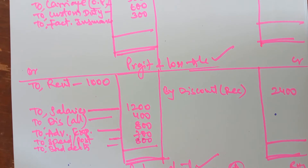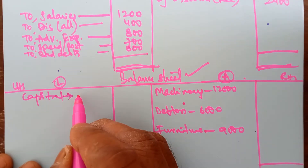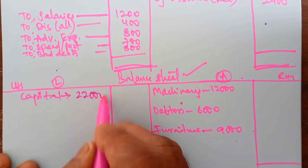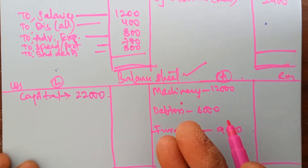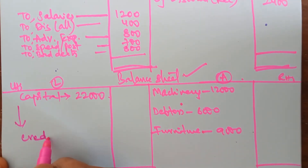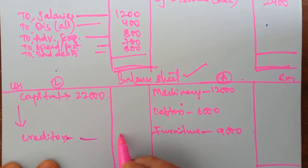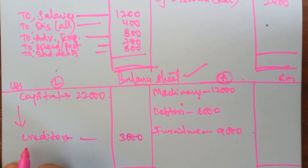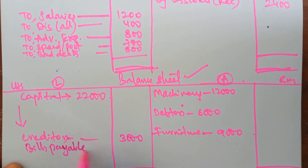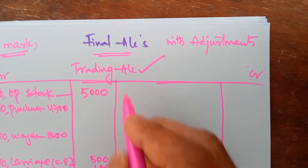On the credit side, the first item is capital. Capital is a liability — it is the amount you are liable to the owner. It is permanent capital and you will pay it back to the owner only at the time of liquidation; till then show it every year as a liability in the balance sheet. Next liability is creditors — the amount you are liable to pay to outsiders. Take it on the liability side. Then bills payable, which is also a liability — it appears on the liability side.